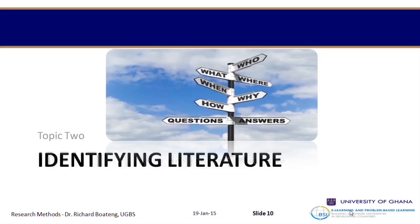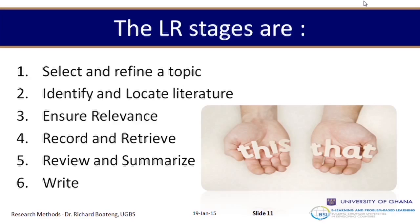So what is the process? How do you identify the literature? The literature review has a number of stages: first, select and refine a topic; second, identify and locate literature; third, ensure relevance; fourth, record and retrieve; fifth, review and summarize; and sixth, write. These six steps play a very key role in every literature review process.